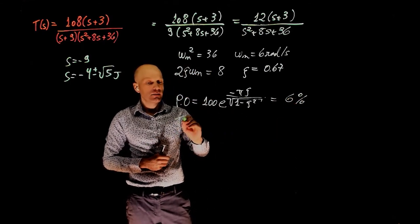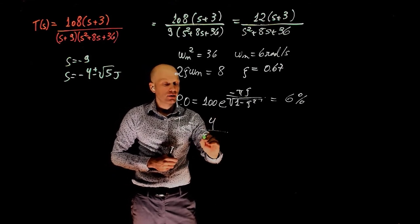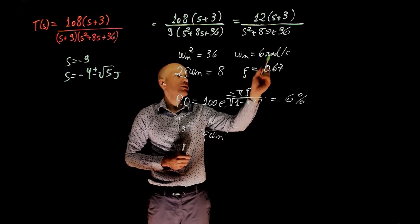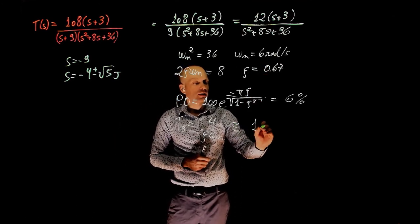The settling time is simply 4 over zeta times omega n. We have zeta here, we have omega n there, and this gives approximately 1 second.